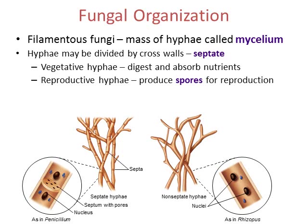In the hyphae structure, filamentous fungi have a mass of hyphae. When many hyphae are together, it's called a mycelium, which creates the body of the fungus. Some hyphae are divided by crosswalls called septae; others are not separated and can have more than one nucleus in one long cell. Hyphae can specialize in two functions: vegetative hyphae that digest and absorb nutrients, and reproductive hyphae that sexually reproduce and produce spores. This represents cellular specialization within the fungi.